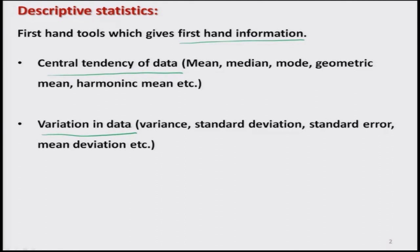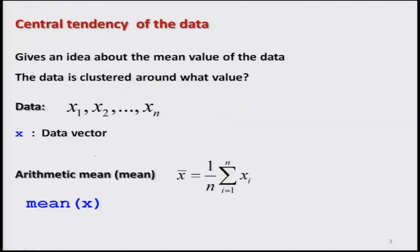There are different tools used to measure the central tendency of data — like mean, median, mode, geometric mean, harmonic mean, and so on. Similarly, when we want to measure the variation in data there are different tools like variance, standard deviation, standard error, mean deviation, absolute deviation, and so on. We are going to concentrate first on the different measures of central tendency.